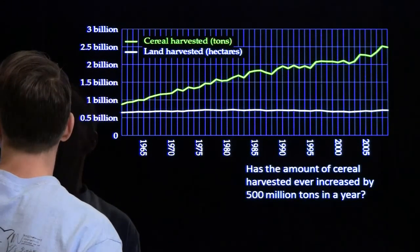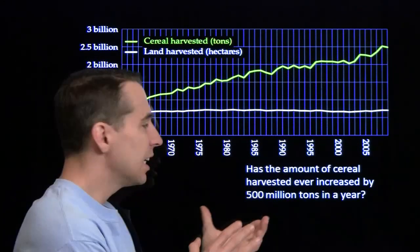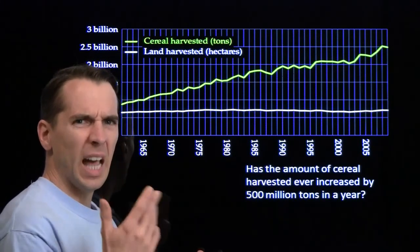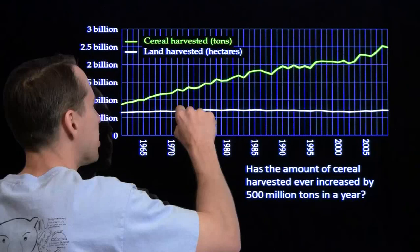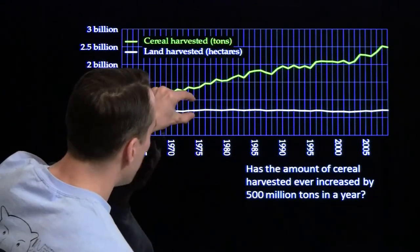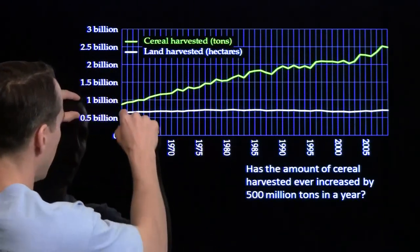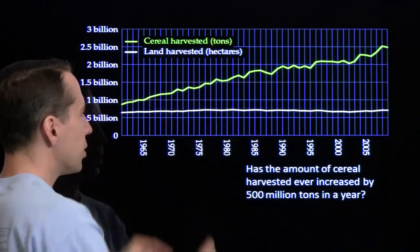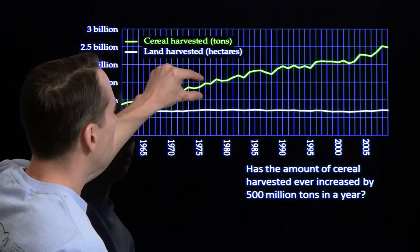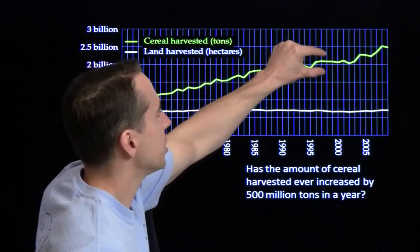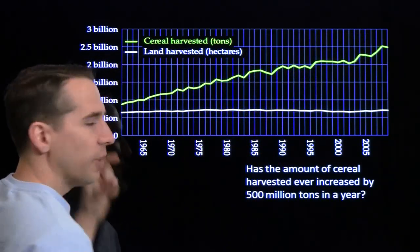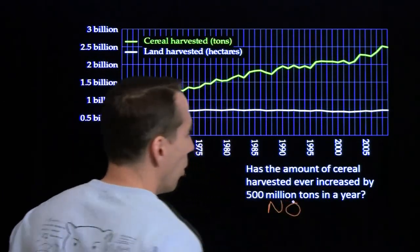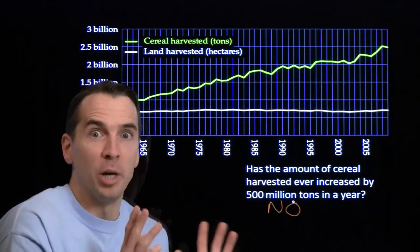Next question: has the amount of cereal harvested ever increased by 500 million tons in a single year? Well, 500 million is half a billion — 0.5 billion — which is about the distance between two horizontal gridlines on this scale. Has the cereal harvested line ever jumped by that much in a single year? We can see that it's never even come close. So the answer is no — we've gotten better, but not that much better that fast.